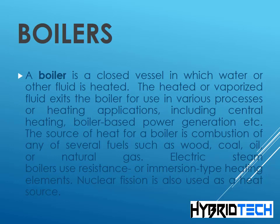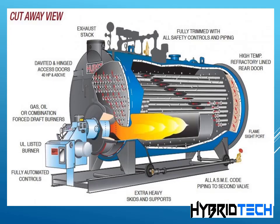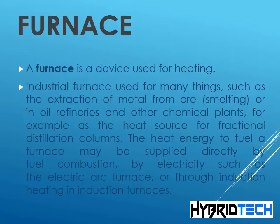Electric steam boilers use resistance or immersion type heating elements; nuclear fission is also used as a heat source. A furnace is used for heating. Industrial furnaces are used for many things such as the extraction of metal from ore, smelting, or in oil refineries and chemical plants as the heat source for fractional distillation columns. Heat energy to fuel a furnace may be supplied by fuel combustion, by electricity such as the electric arc furnace, or through induction heating in induction furnaces.